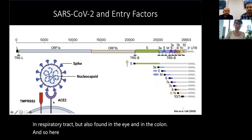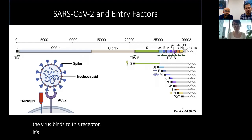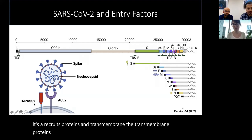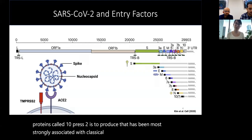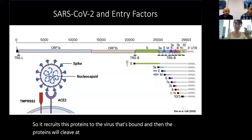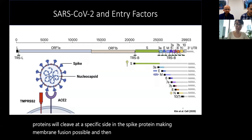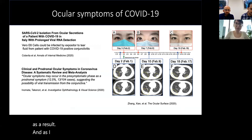When the virus binds to the ACE2 receptor, it recruits a protease — the transmembrane protease TMPRSS2, which has been most strongly associated with classical SARS-CoV-2 infection. This protease cleaves at a specific site in the spike protein, making membrane fusion possible, resulting in an infected cell.